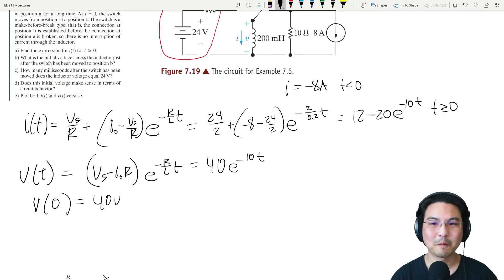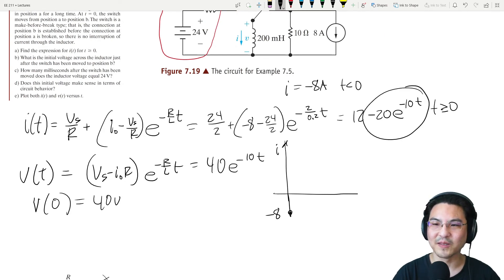Let's skip ahead a little bit to part E. What does that look like? If you look here, the current starts up at t equal to zero, then it's going to be 12 minus 20, so negative 8. So initially the current is here at negative 8, and then it converges to 12 over here like this.